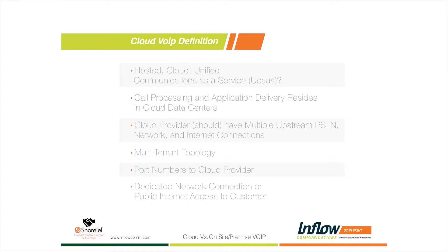Unified Communications as a Service, or UCaaS — bundling these terms under one umbrella — consists of the same components: call processing and unified communications applications that reside in the cloud. The cloud is essentially a series of data centers from a qualified provider, where you are not installing this equipment on site.